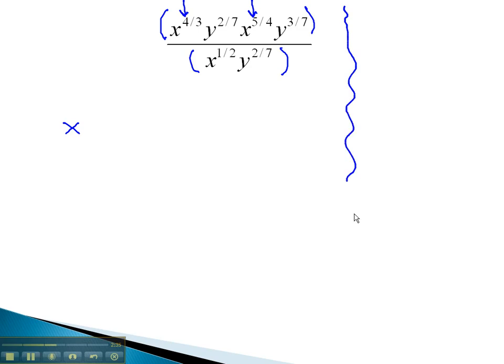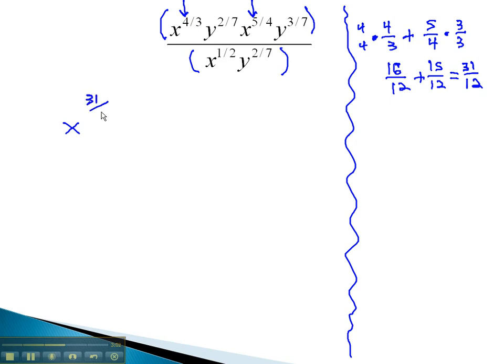Adding exponents may be difficult to do mentally, so let's put some scratch work off to the side. We're adding 4/3 plus 5/4. To add, we need a common denominator of 12. Multiplying the first fraction by 4 and the second by 3, we get 16/12 plus 15/12, which is 31/12. This is the new exponent on x.